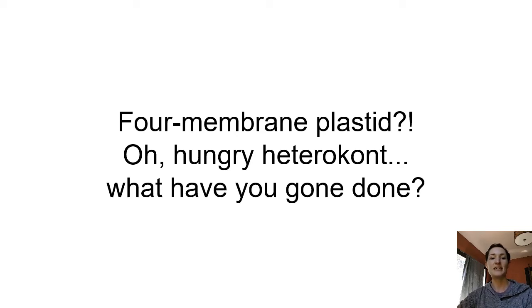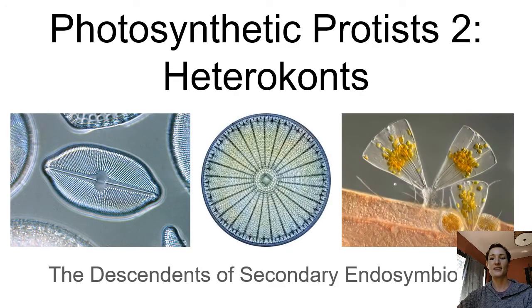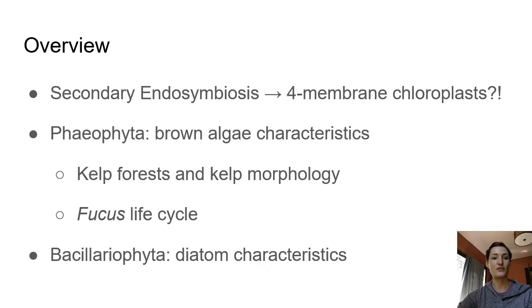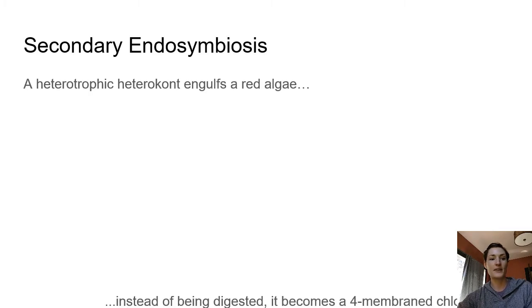In this video we're going to look at descendants of secondary endosymbiosis — chloroplasts that have three or four membranes. They would have started with four and maybe one degraded throughout that process. Our photosynthetic protists here are heteroconts, things related to the oomycetes but that have evolved photosynthesis due to secondary endosymbiosis. In this particular video we're looking at secondary endosymbiosis, drawing it out, and then the characteristics of brown algae.